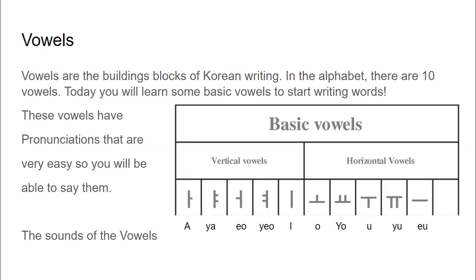Vowels. Vowels are the building blocks of Korean writing. In the alphabet there are 10 vowels. Today you will learn some basic vowels to start writing words. These vowels have pronunciations that are very useful to be able to state them.